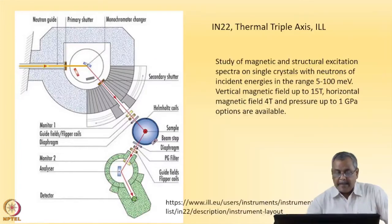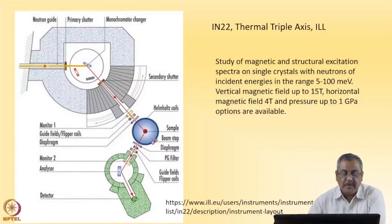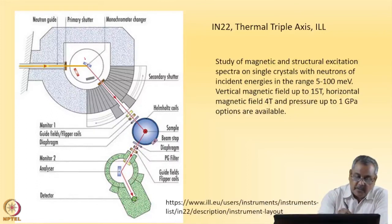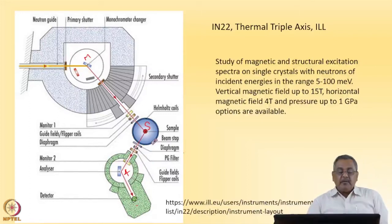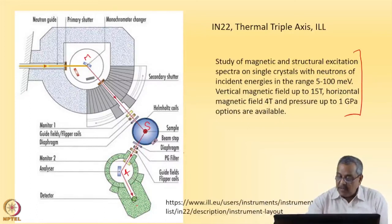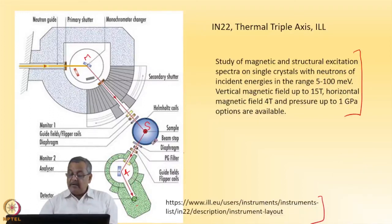Let me show you, I tried to show you triple axis spectrometers from reactors. The structure is similar: this is the monochromator, this is the sample, and there is an analyzer on three axes and the detector. This is IN22, the basic structure is the same. You can see here it can have incident energies in the range of 5 to 100 meV, a reasonably large energy range can be covered.